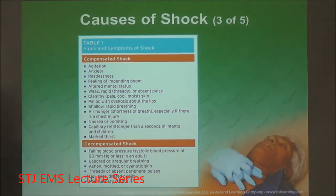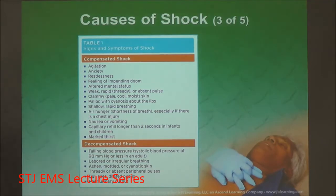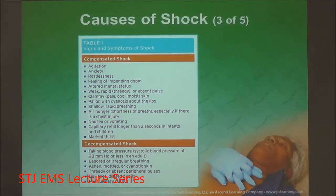The first organ system to get blood shunted from it is the skin and musculoskeletal system. What we end up with is cramping and cold, pale, sweaty skin — diaphoresis. The blood pressure is going to be normal, heart rate might be elevated — the patient is in compensatory shock.